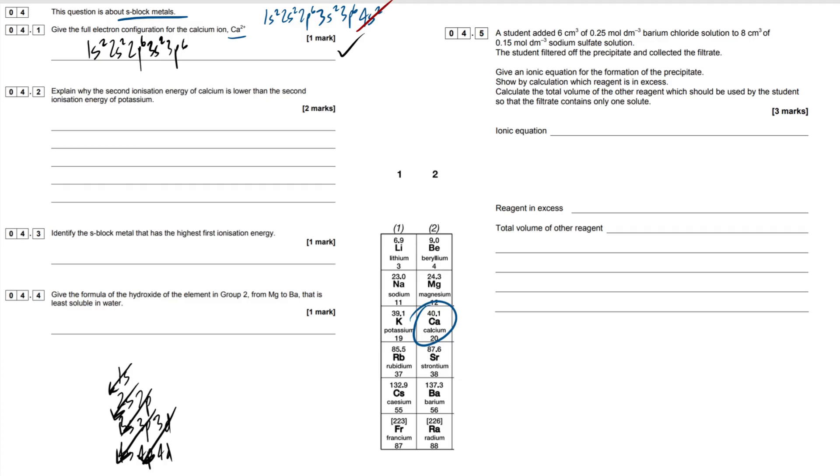Next question then. So explain why the second ionization energy of calcium is lower than the second ionization energy of potassium. What I'm going to do here is, if we compare calcium and potassium, calcium has 20 electrons, potassium has 19, but we're not focused on the atoms, we're focused on the 1 plus ions. The reason for that is because what is the second ionization energy? The second ionization energy is going from 1 plus ion to a 2 plus ion.